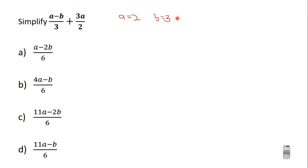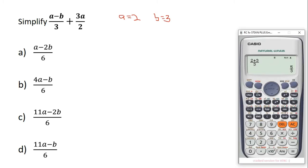You switch on your calculator and enter the expression. Since it's a fraction, you press the fraction button. We have a minus b as the numerator, so you press Alpha then A, then minus, then Alpha then B. Then the denominator is 3. You press this button to move to the denominator area, then press addition or plus.